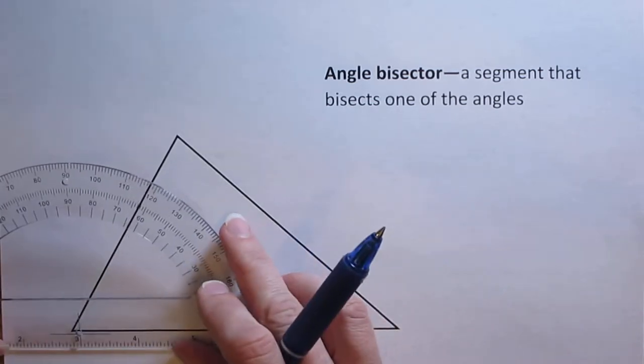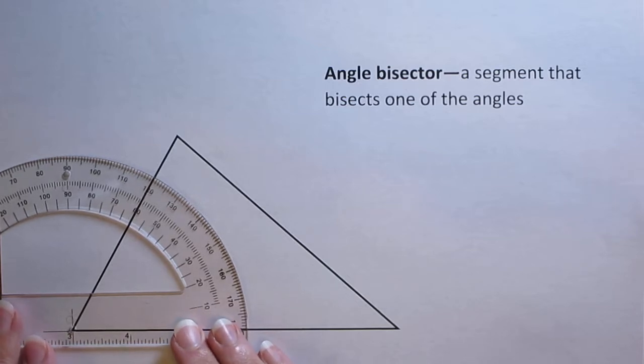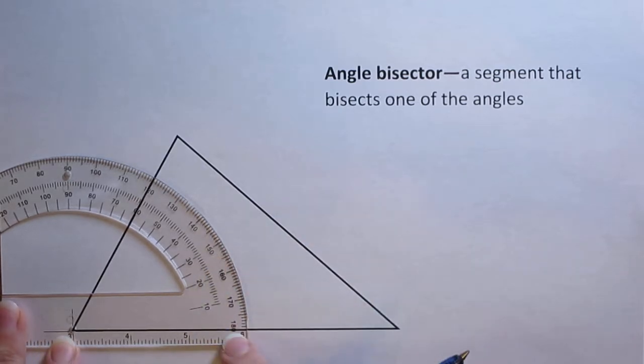So one at a time I'm going to go through, set my protractor on here, put the center point of my protractor on the vertex of the triangle. I want to make sure that the line that's on my protractor lines up with the bottom side of my triangle all the way out to the very end where it says 180 degrees.